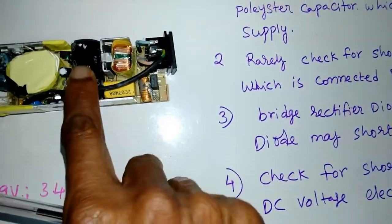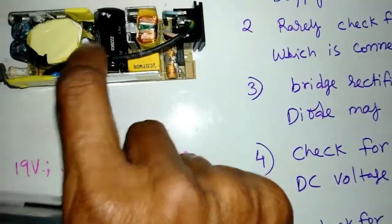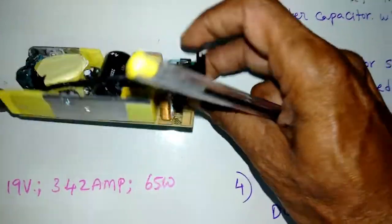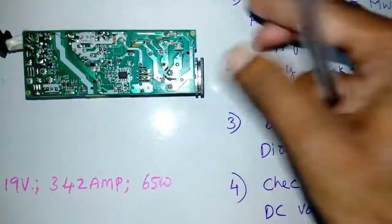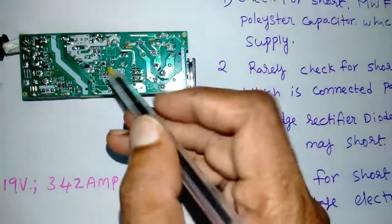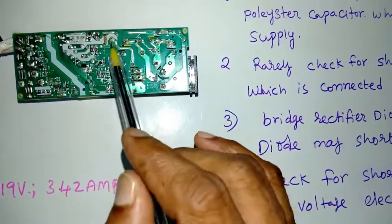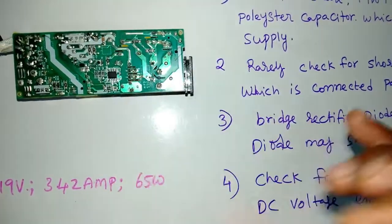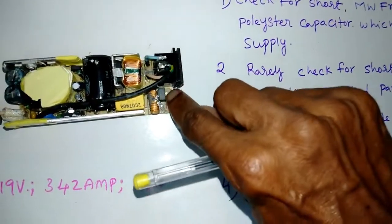This one is the main filter capacitor, 120 microfarad 400 volt. This capacitor filters and stores the smooth DC current. This may short, and at that time also this fuse blows.